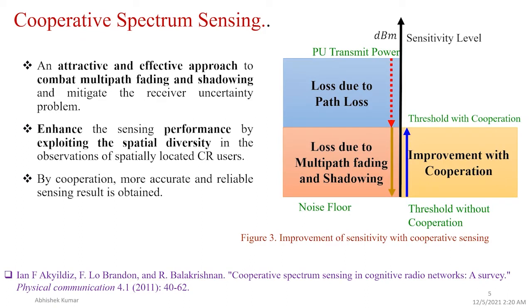Cooperative spectrum sensing is an attractive approach which combats multipath fading and shadowing and mitigates the receiver uncertainty problem. It enhances sensing performance by exploiting the spatial diversity among cognitive users through cooperation. More accurate and reliable sensing results are obtained, as represented in figure three. In this figure, the basic problem of sensing is data loss due to path loss, multipath fading, and shadowing. Cognitive radio with cooperation provides a cooperation gain which can overcome this loss.